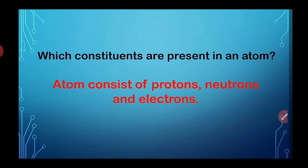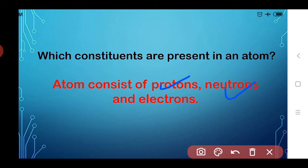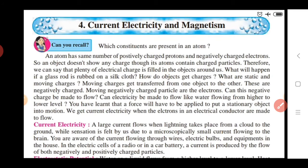In this lesson, they first give us a recall question: which constituents are present in an atom? Think about it. The atom is made up of three parts: proton, neutron, and electrons. These three parts form an atom. That is the answer to the first question.